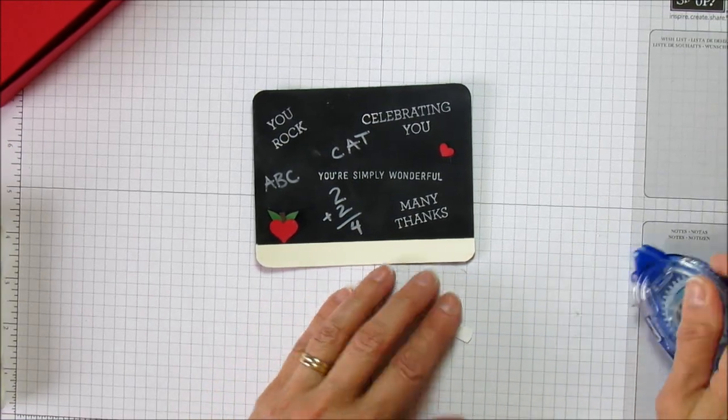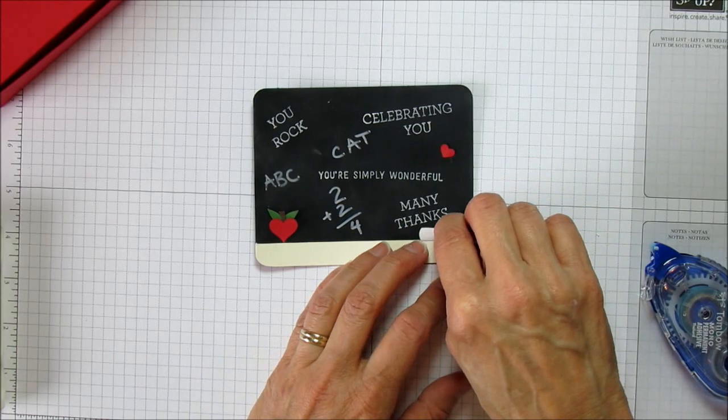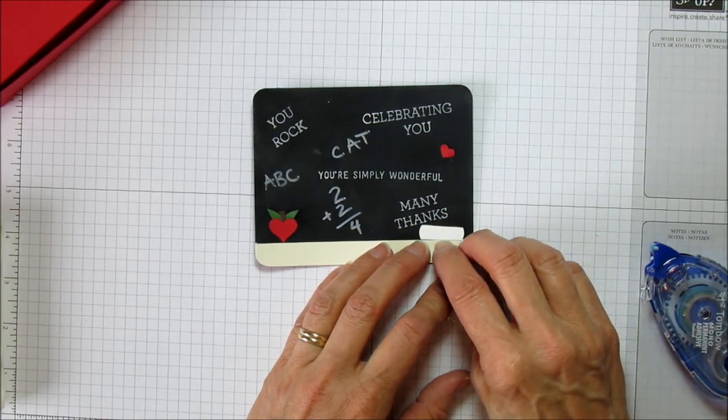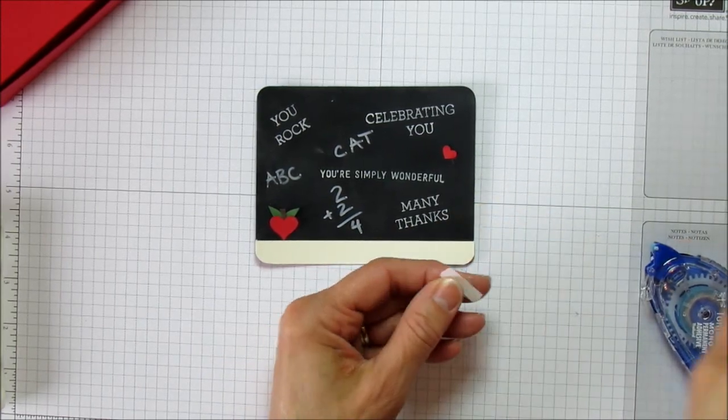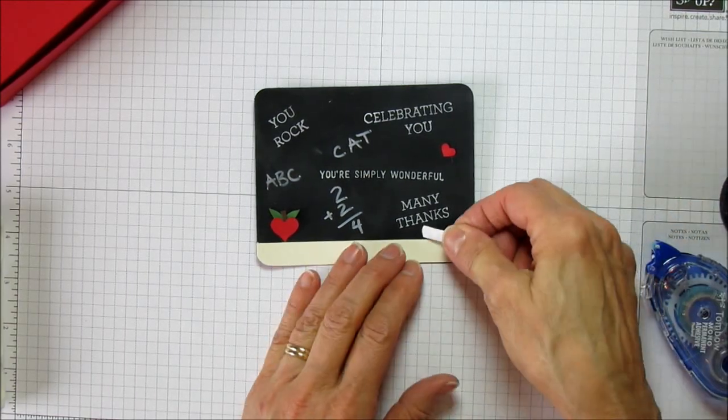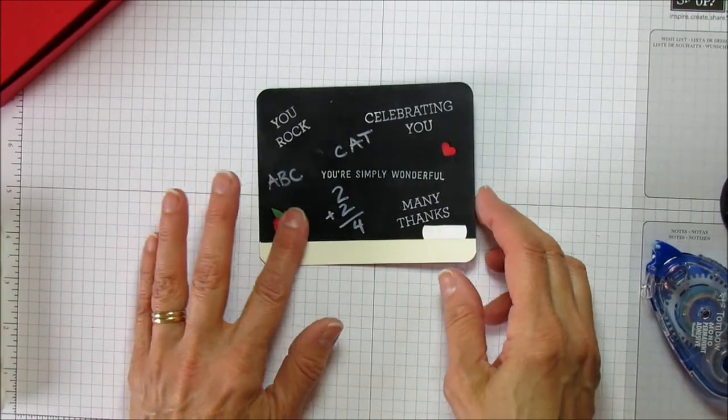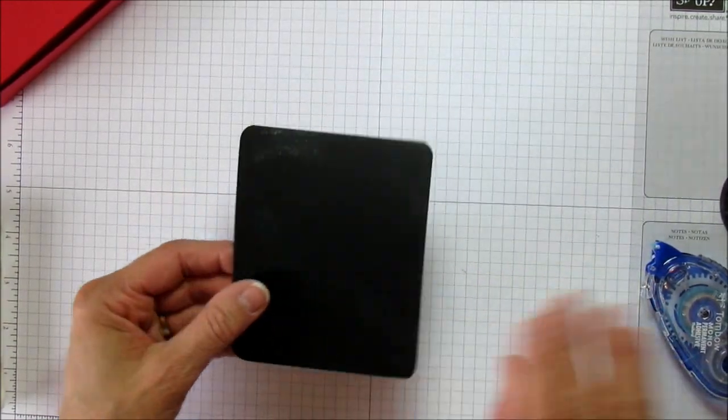Then we'll just add a little piece of chalk there. I'm going to cut this just a hair thinner. I don't want it to interfere. Now we're ready to attach it to the top of our box.